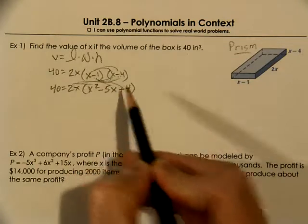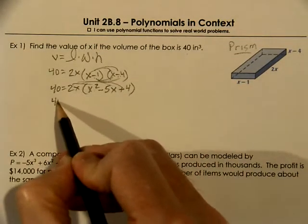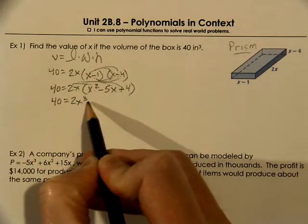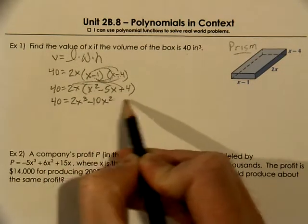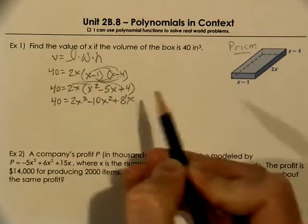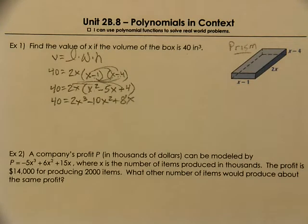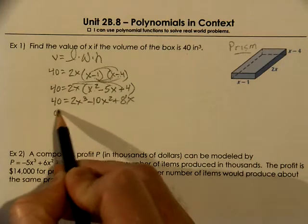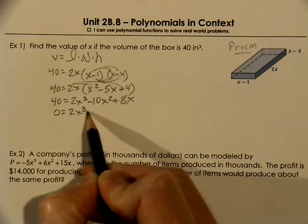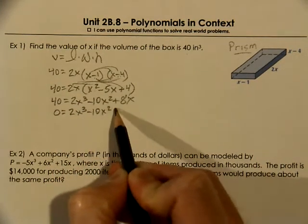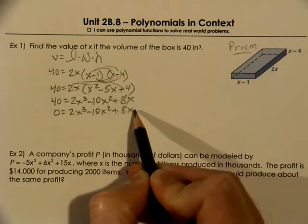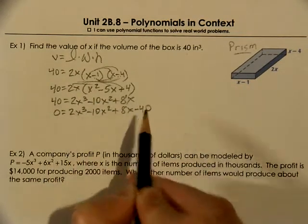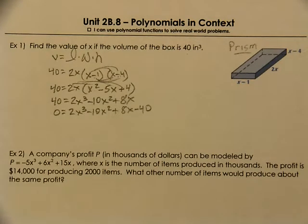Then I expect most of you would distribute your 2x through to get 2x cubed minus 10x squared plus 8x. Now often we would want to bring our 40 over to the other side. And that would be subtracting it to the other side. Now you've got all your terms on one side and it equals 0 on the other.